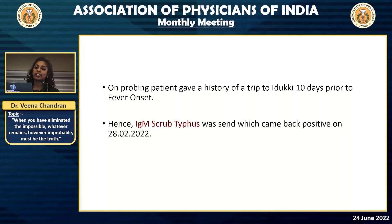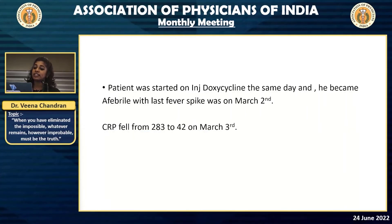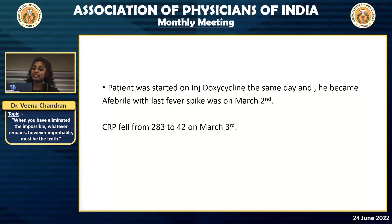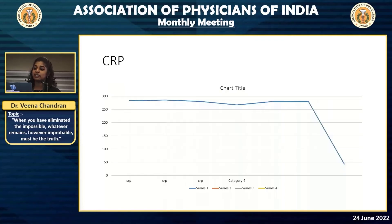On the 28th, IgM scrub typhus came back positive. The patient was recuperating from his popliteal artery aneurysm surgery at that point. On the same day, we started the patient on doxycycline. About 36 hours after starting doxycycline, he had his last fever spike. About 48 hours after starting doxycycline, we checked the CRP again, and for the first time in one and a half months, the CRP fell from 283 to 42.